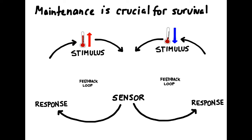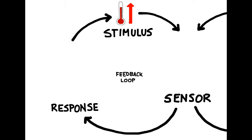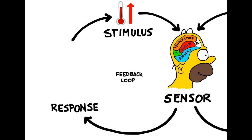Organisms including humans use something called a feedback loop to help maintain homeostasis. Feedback loops are broken into three parts: the stimulus, the sensor, and the response. Imagine that it's a very hot day and the individual's body temperature is rising. The rising temperature is the stimulus, which is then detected by the sensor located within the individual's brain.